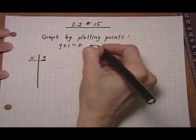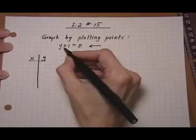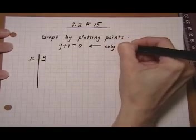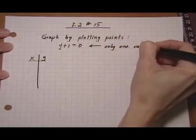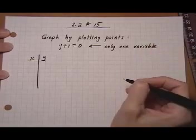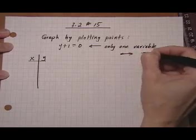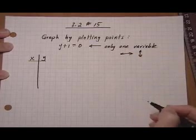And the first thing I want to point out is that there's only one variable here, just a y. Now as soon as you see that happening, it means you're either going to get a horizontal line or you're going to get a vertical line for an answer.